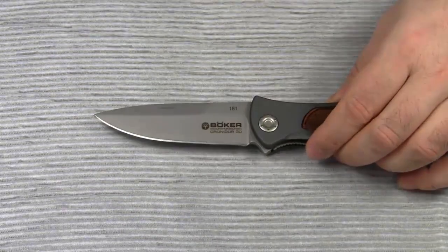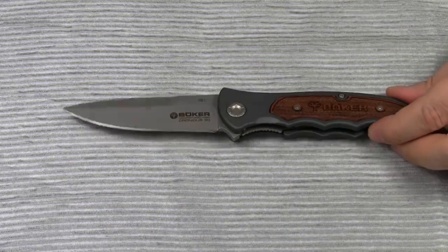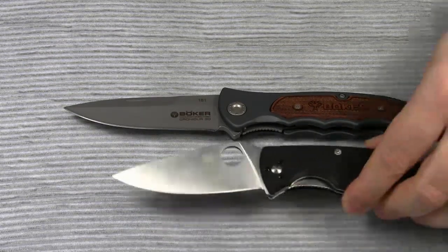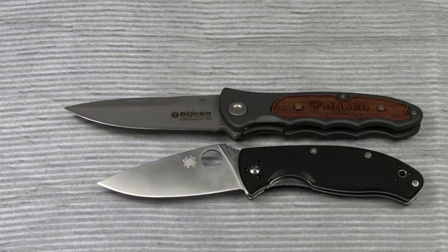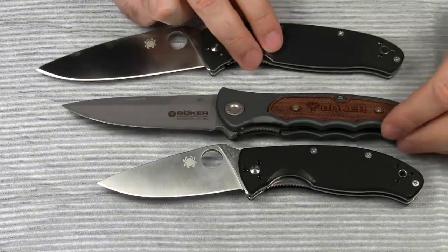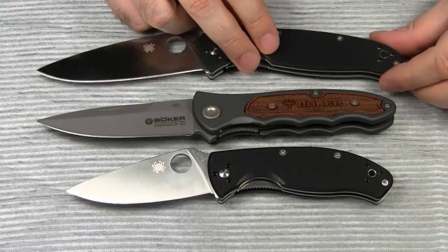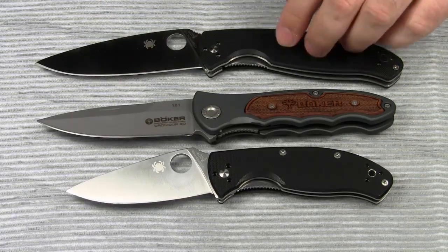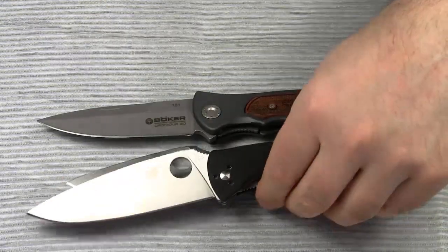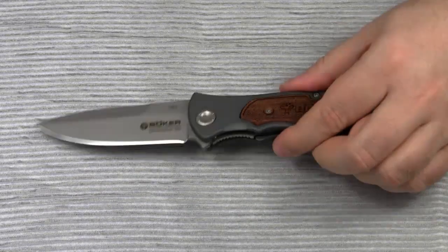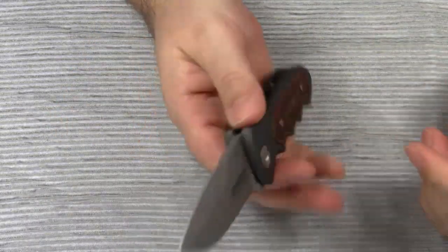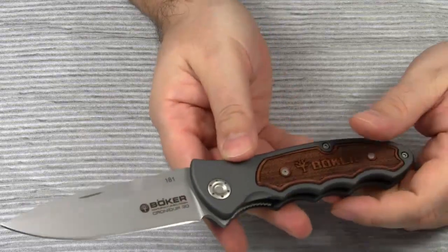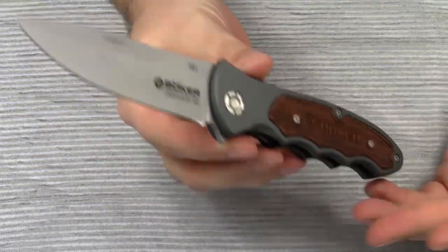To give you a size comparison, size-wise, the Turbine is between the Spyderco Tenacious and the Spyderco Resilience. The weight comes in at 156 grams, so it's not a lightweight knife. But given the size, it's more than acceptable.